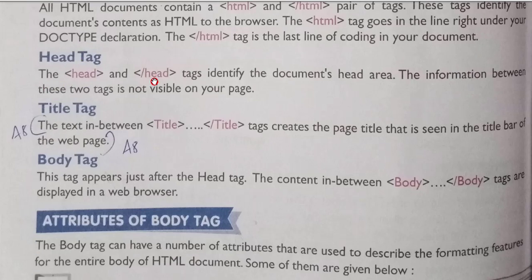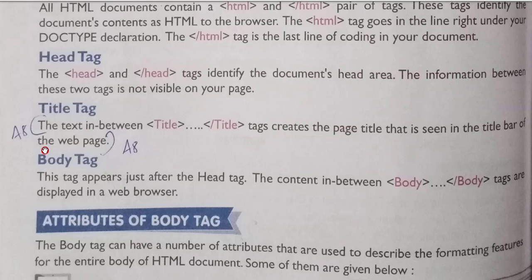Second, the head tag: the opening and closing head tags identify the document's head area. The information between these two tags is not visible on your page — it will be displayed in the title bar of your page. Next, the title tag: the text between the title tag creates the page title that is seen in the title bar of the web page. The title tag is a sub-tag of the head tag, meaning we write the title tag inside the head tag.